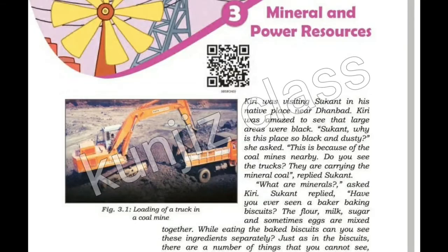Kiri was visiting Sugandh in his native place near Denbaab. Kiri was amazed to see that large areas were black. Sugandh, why is this place so black and dusty? she asked. This is because of the coal mines nearby. Do you see the trucks? They are carrying the mineral coal, replied Sugandh.